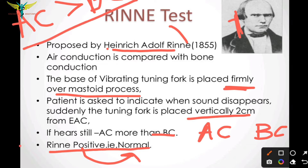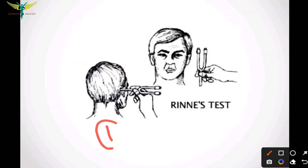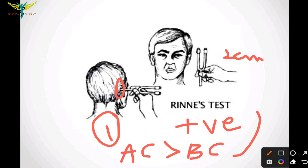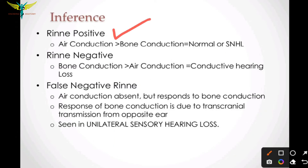As we have learned, air conduction will always be greater than bone conduction. The Rinne's test determines that air conduction is better than bone conduction, and the positive Rinne's test is normal. This is the procedure: the vibrating tuning fork is placed onto the mastoid of the patient, and after he stops feeling the vibrations, the tuning fork is placed two centimeters vertically to the external auditory canal of the same ear. If the patient hears the vibration, it indicates Rinne's positive — air conduction is greater than bone conduction.